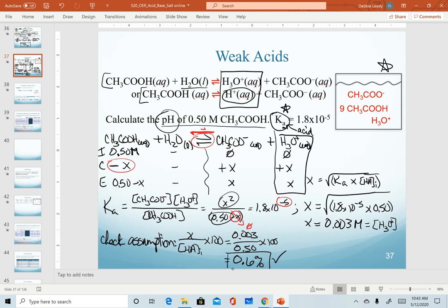Now that we know our assumption is valid, we can calculate the pH by taking the negative log of our hydronium concentration. Since x is already in concentration units, we can plug that 0.003 in to our pH equation. And we get a pH value of 2.52. That is our final answer for this example.